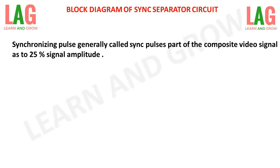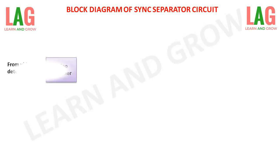Synchronizing pulses occupy the top 25% of the composite video signal, available at the top of the amplitude of the composite video signal. The composite video signal obtained from the video detector will be applied to the amplifier circuit, and the process is carried out in this block diagram.